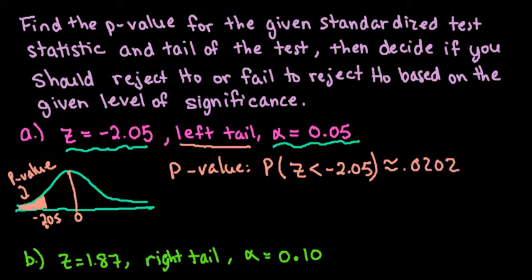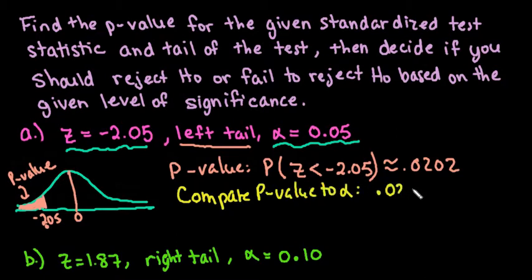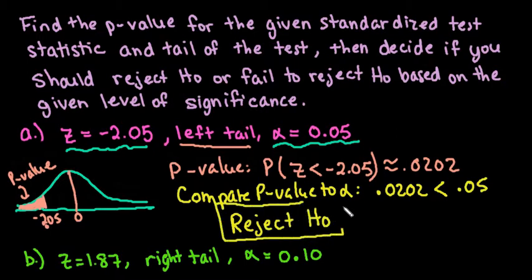To make a decision, we compare our p-value to our alpha. We set up 0.0202 and compare it to our alpha. Since 0.0202 is less than the alpha of 0.05, that means we reject. Anytime our p-value is less than or equal to alpha, we reject. If it's greater than, we fail to reject.